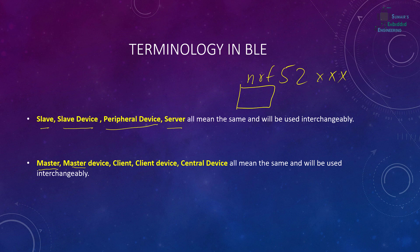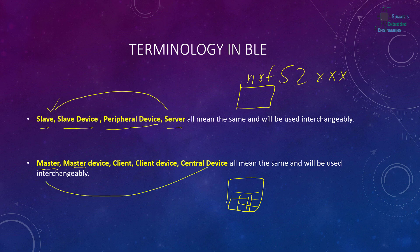While on the other hand, the master, master device, client, client device, or central device — whatever I say — they all mean we are going to connect with the master device, which in our cases would be our mobile phone, or it can be another nRF52832 or nRF52840. So slave device terminologies are all the same, and master/central/client terminologies are all the same. Now let's start talking about the profiles.